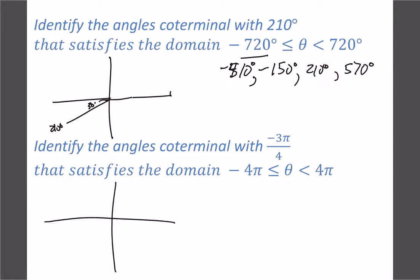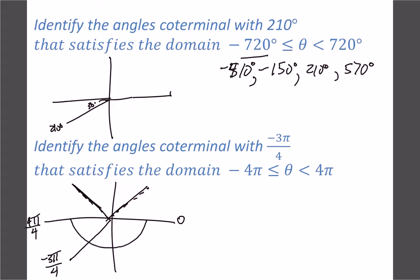For radians, with an angle of negative 3π/4: this goes backwards three-quarters of the way. Think of it as fractions of π — π equals 4π/4, so three-quarters backwards is negative 3π/4. To find co-terminal angles, add or subtract 2π (which equals 8π/4). Subtracting: negative 3π/4 minus 8π/4 = negative 11π/4. Adding: negative 3π/4 plus 8π/4 = 5π/4. Adding again: 5π/4 + 8π/4 = 13π/4.